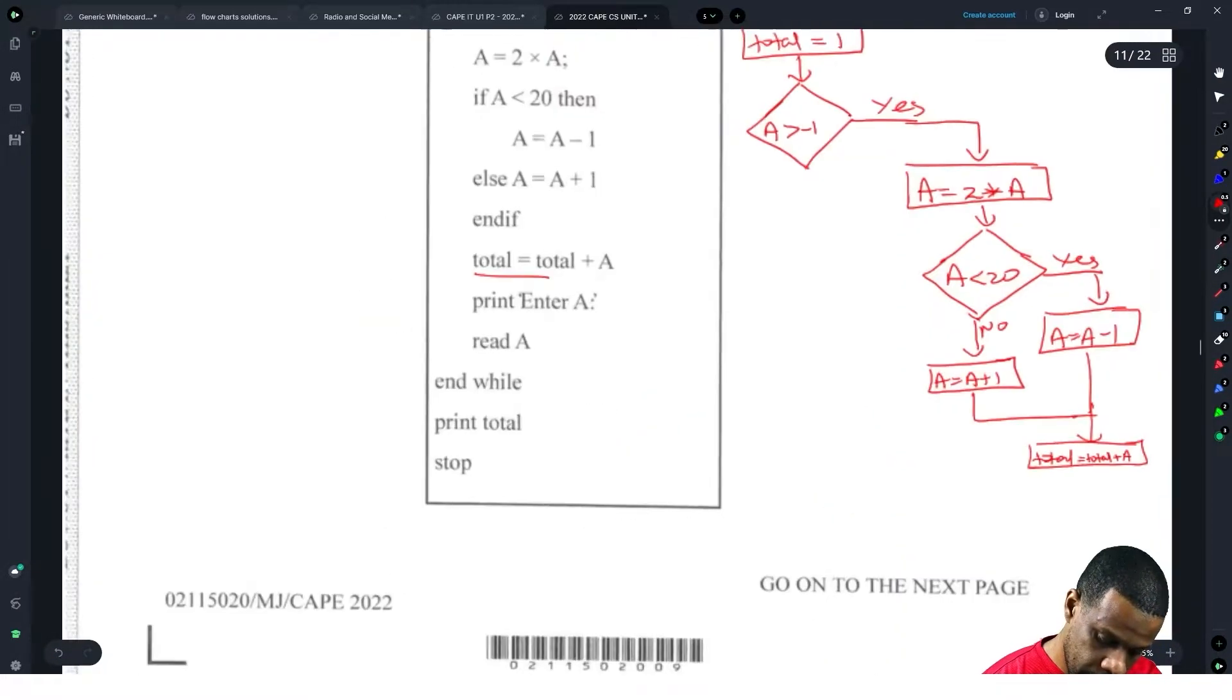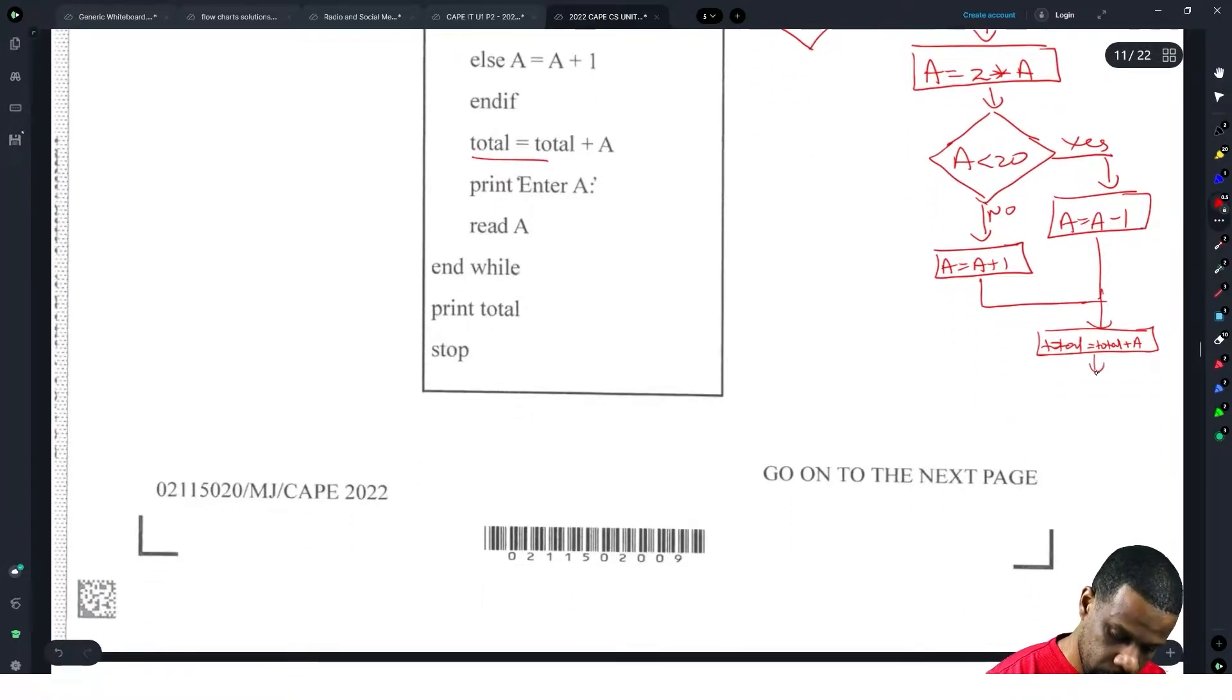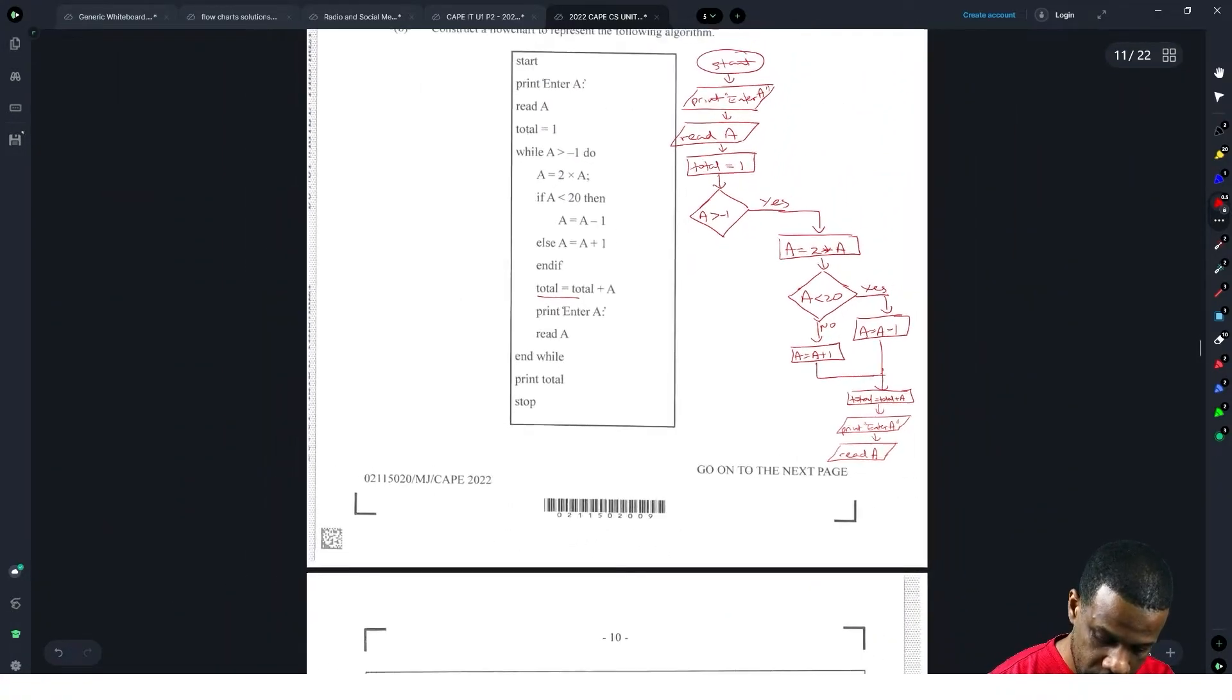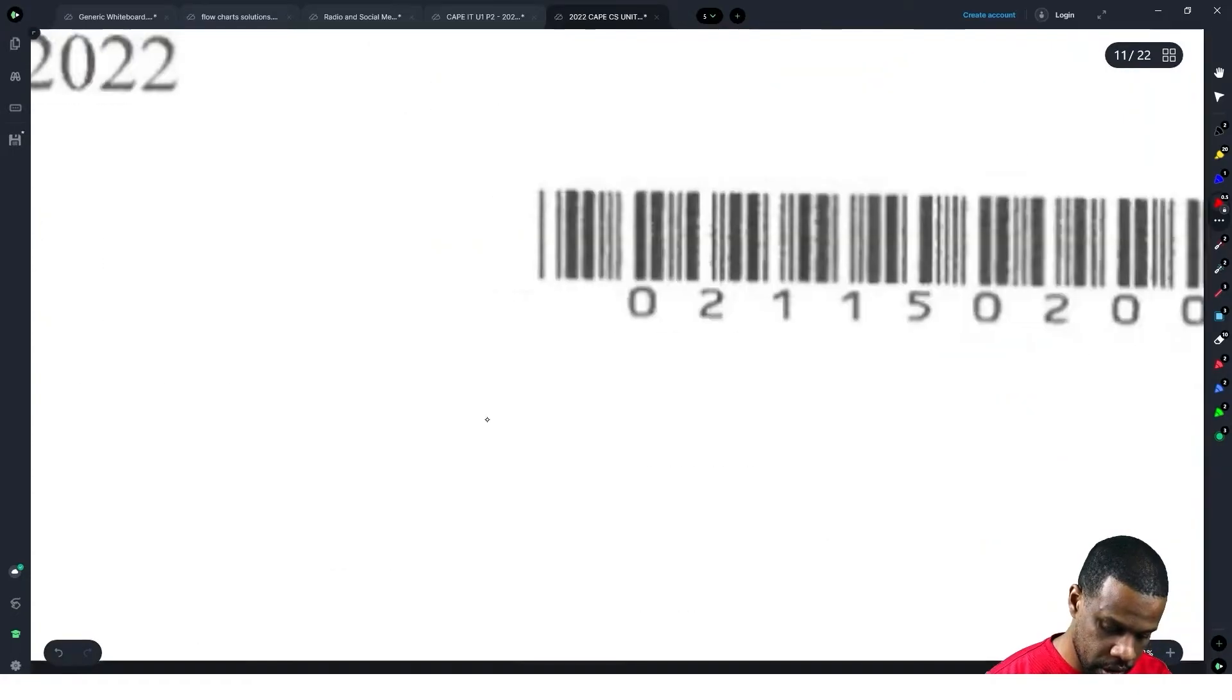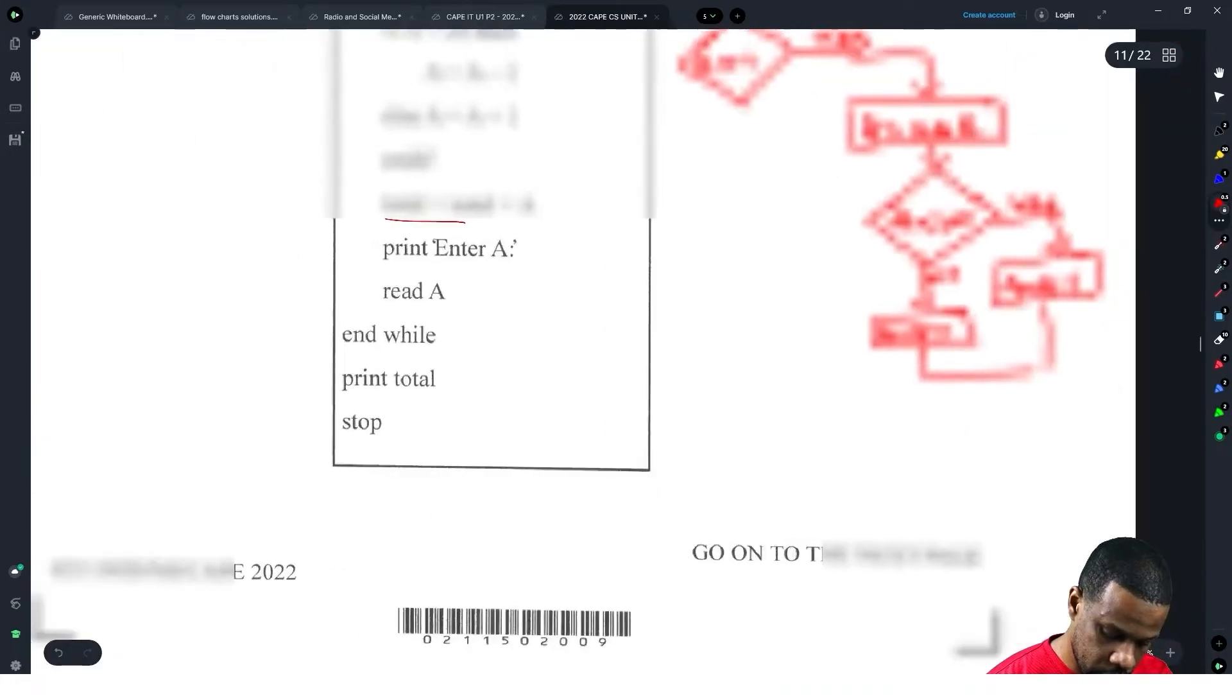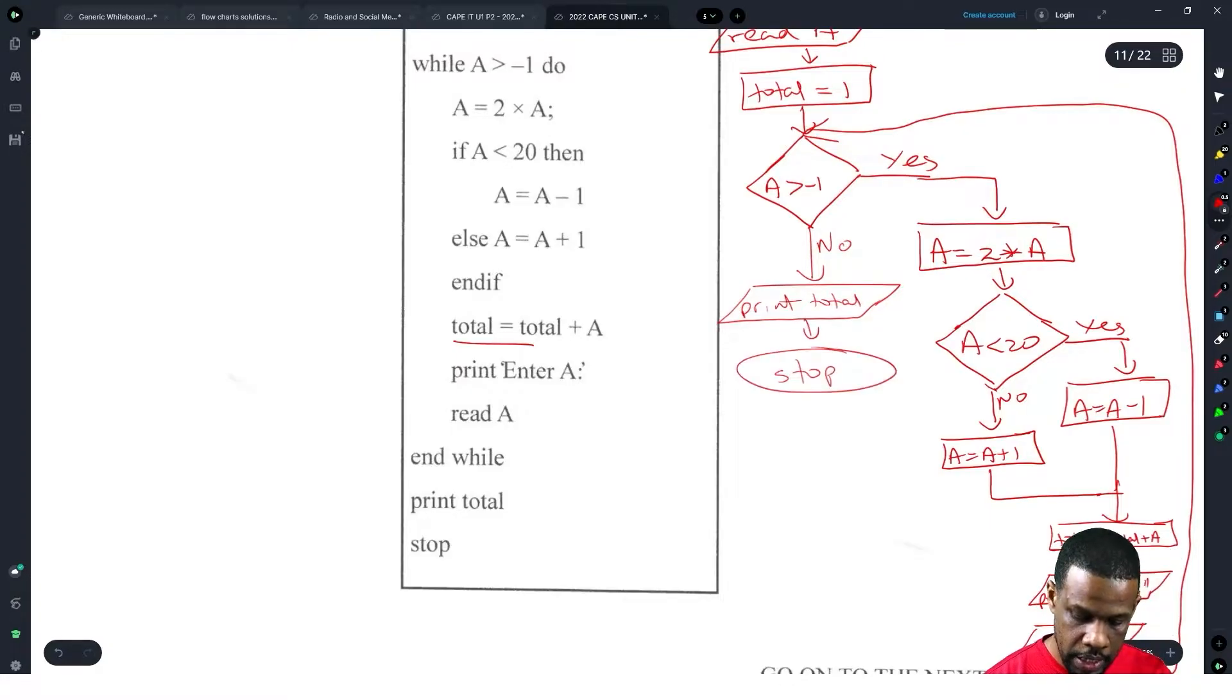Alright cool. And then print Enter A and read A. So we're going down again. Parallelogram, print Enter A, and then we'll read A, which is our next parallelogram. Right now the while loop has ended, so we're going to get a nice little look back to the first diamond. Let me see if I can get this look back properly. Back to right here. Cool. Alright, once we get our look back to where the first diamond starts, the end while. So now we reached, print total. So if our answer is no, we're going to print total and then we're going to stop. Yeah, that's the flowchart right there.